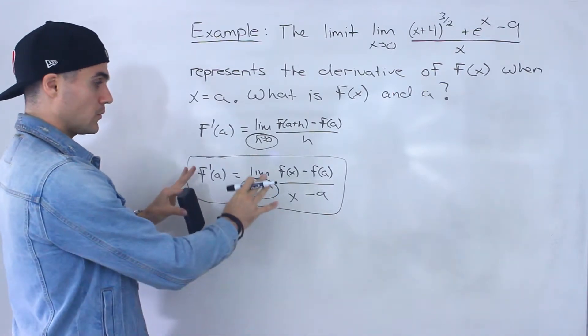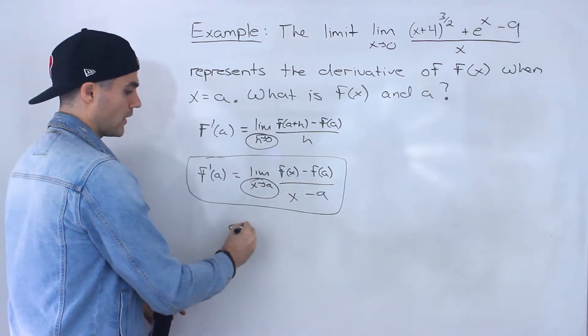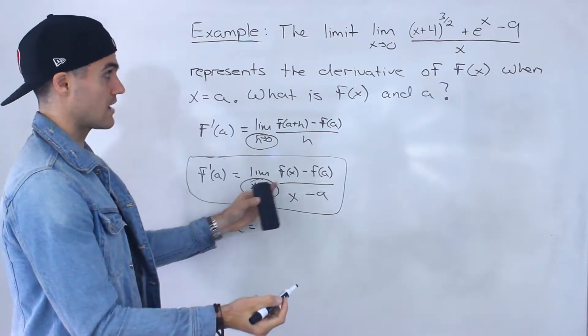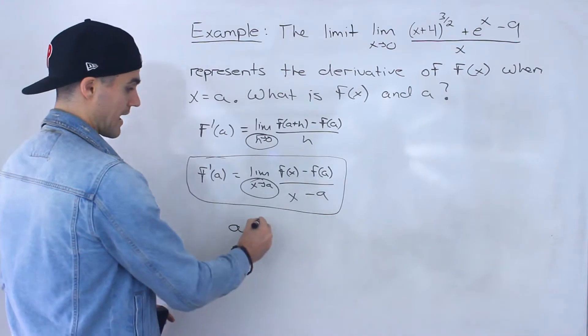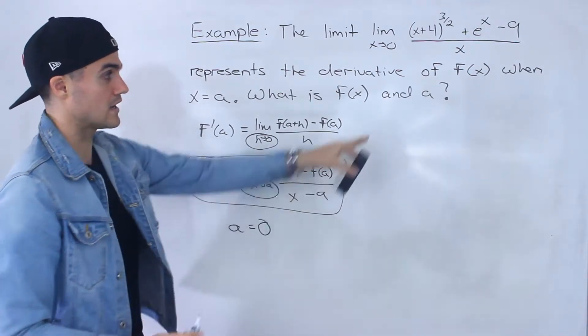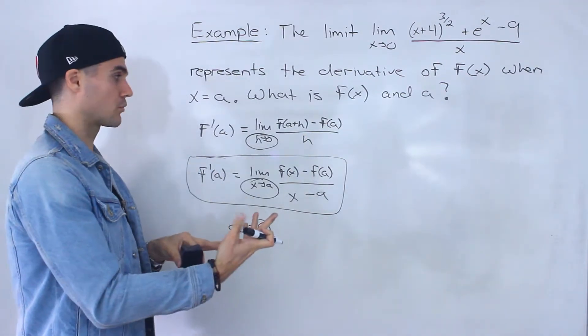If we're working with this definition here, notice it's really easy to figure out what is the a value. Because notice as x approaches a, and then we have as x approaches 0 over here. And so the a value we know is 0. So we're already done half of the question just by figuring out which definition we're working with.